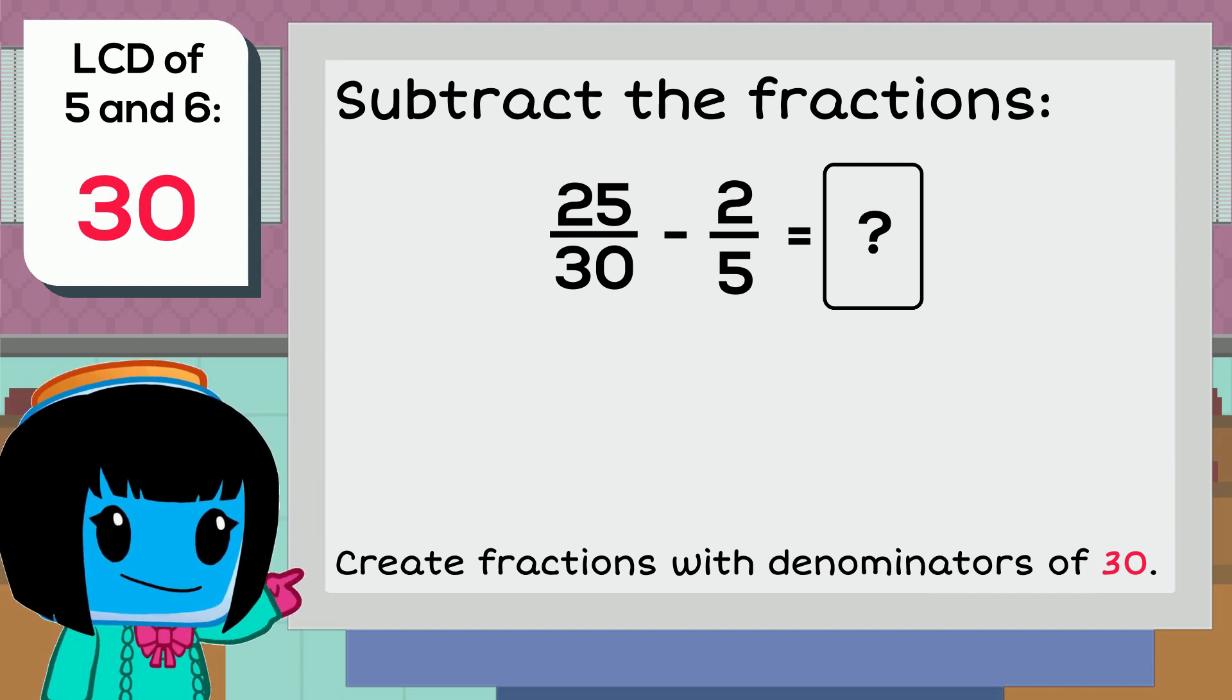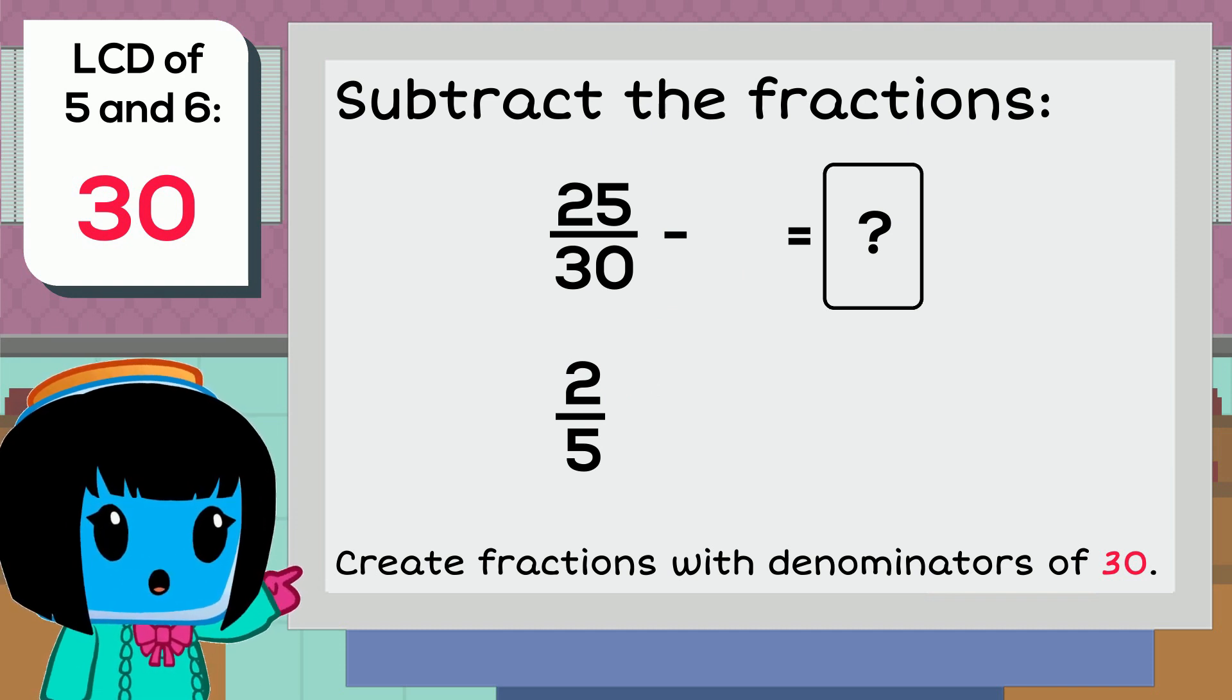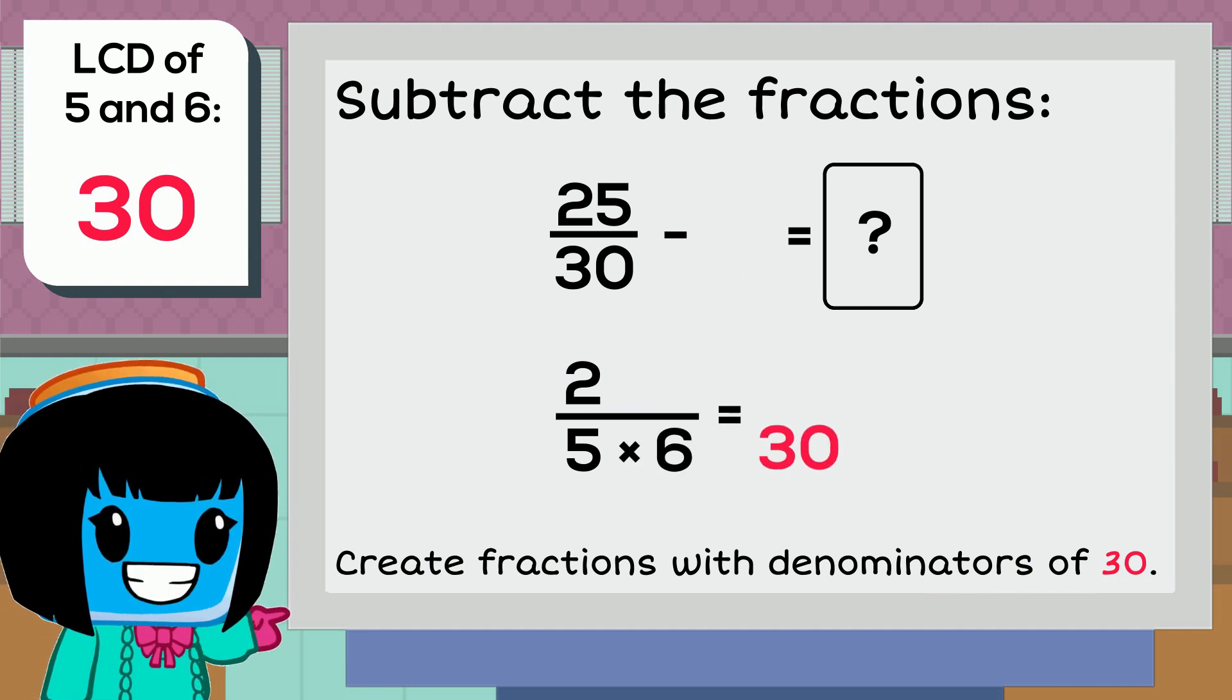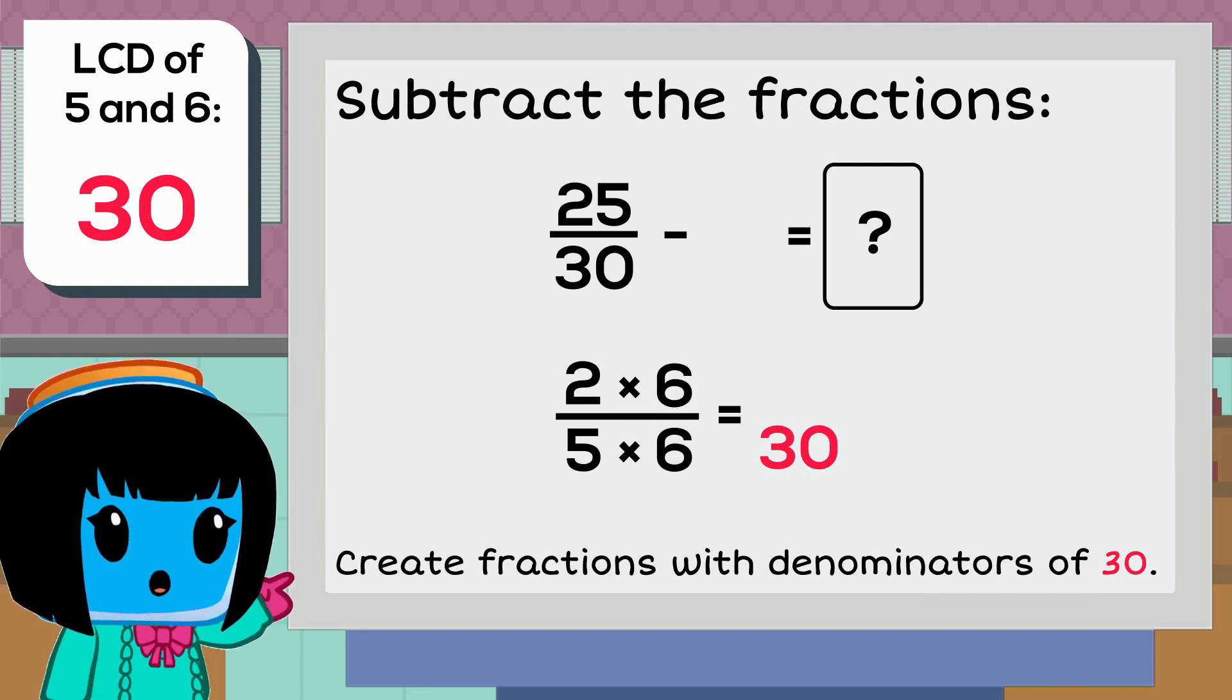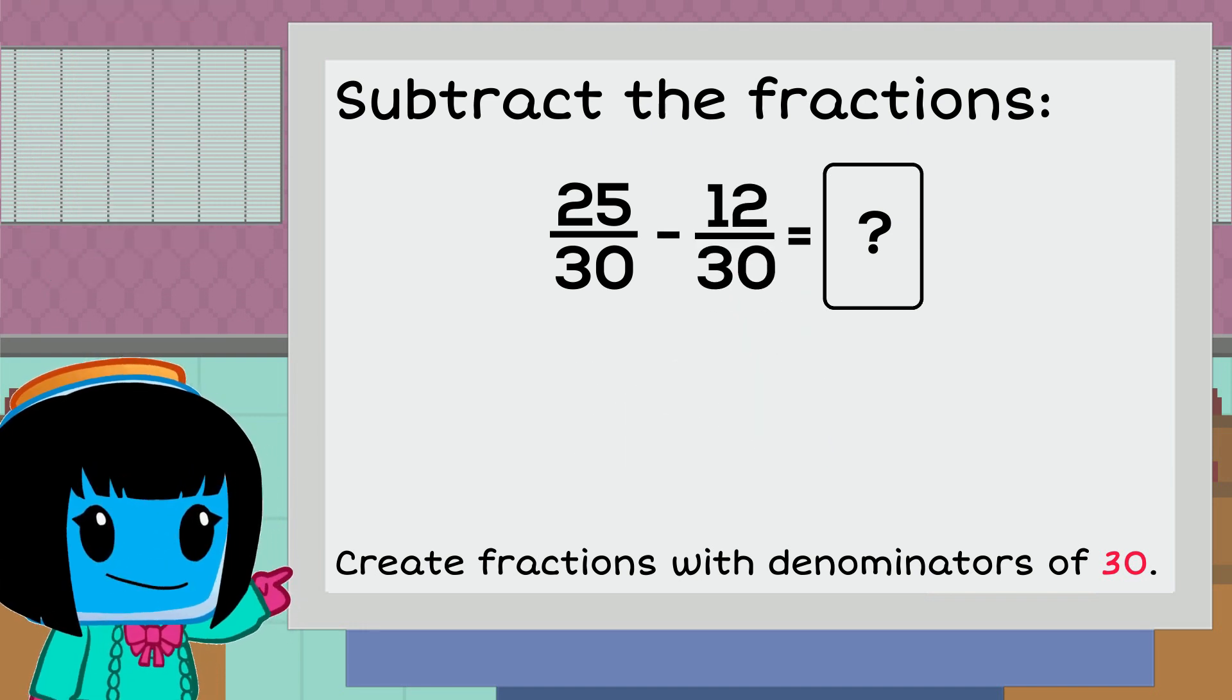Let's do the same thing with the other fraction, 2 fifths. To create a fraction with a denominator of 30, we would have to multiply 5 by 6. Whatever we do to the denominator, we need to do to the numerator. So 2 times 6 is 12, making the equivalent fraction 12 thirtieths.